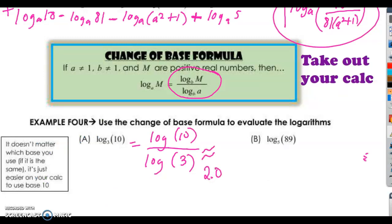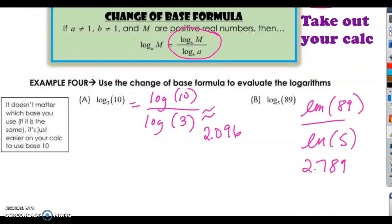2.0, what was it, 9.6 or something? Okay. For the next one, log base 5 of 89, let's just do natural logs. So let's just say I did natural log of 89, over the natural log of 5. Type that into your calculator, and you should get something like 2.789. I think that is all.